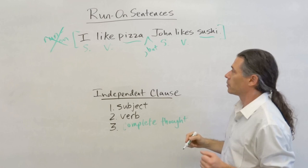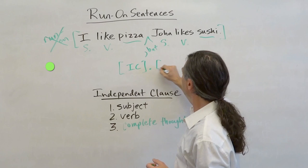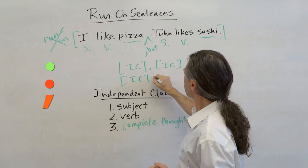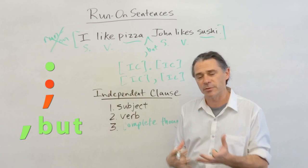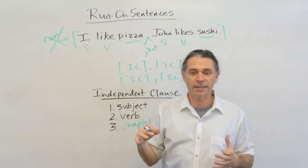So to review, if we have two independent clauses, we can correct with a period. We can correct it with a semicolon. Or, as we did here, we can correct it with a comma and a coordinating conjunction. If you can master these types of corrections, the quality of your writing will improve dramatically, and your teachers and professors will give you excellent grades.